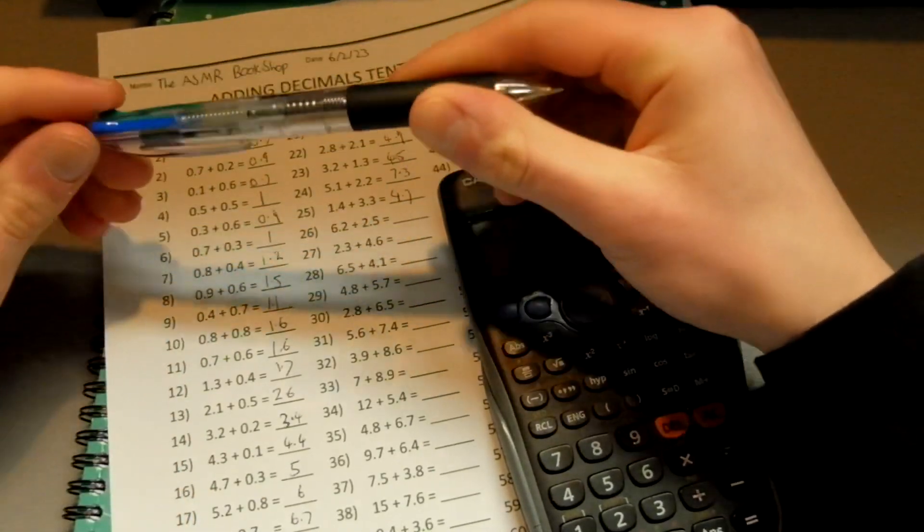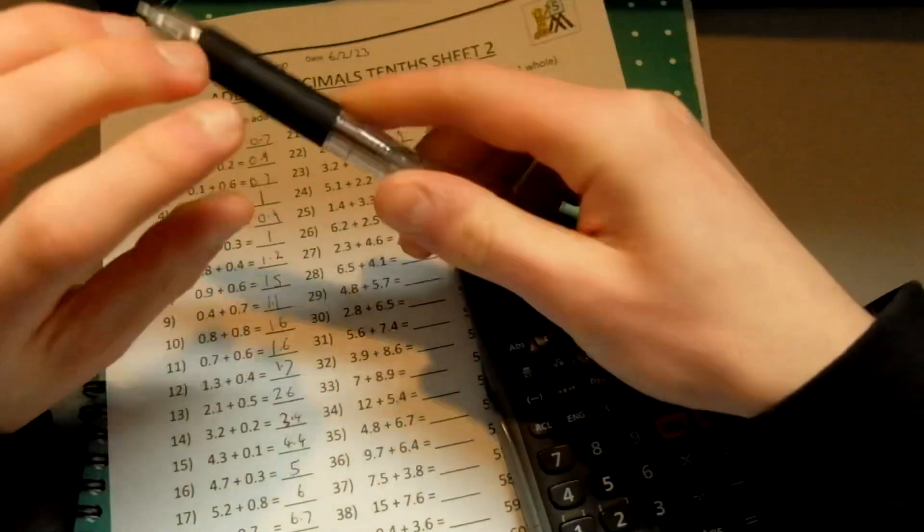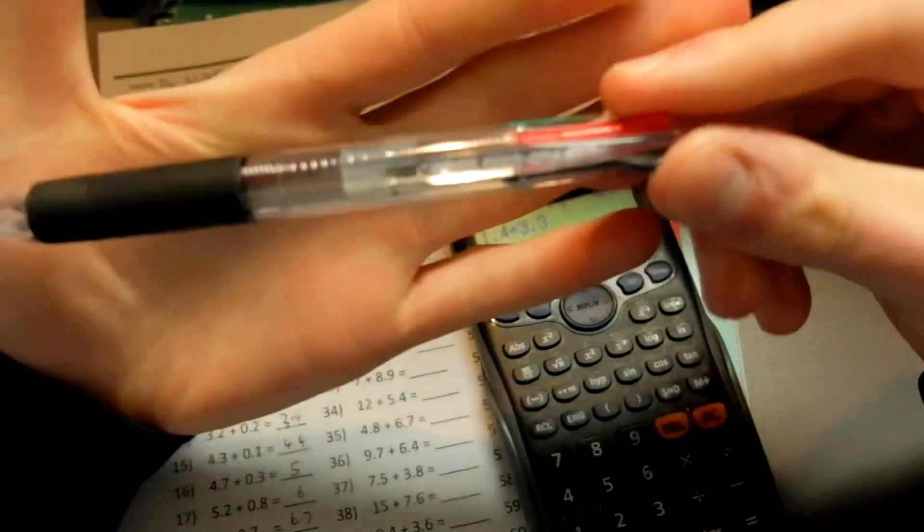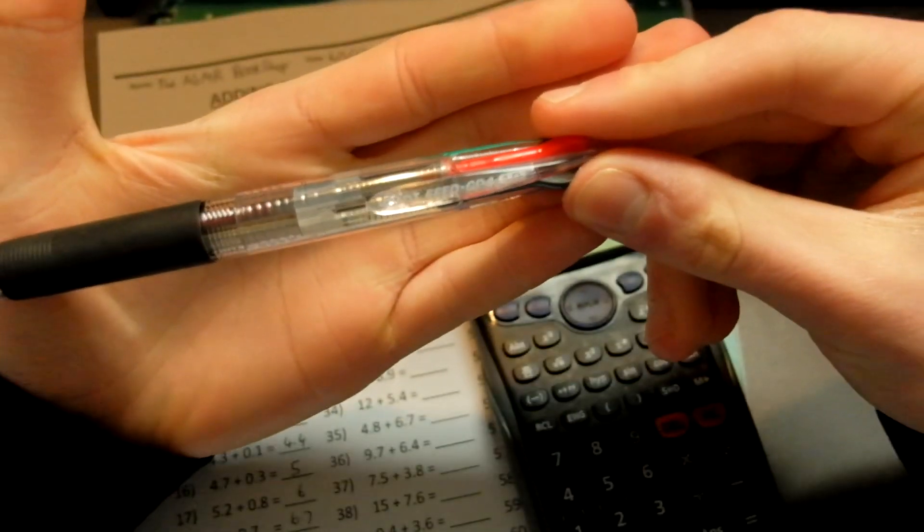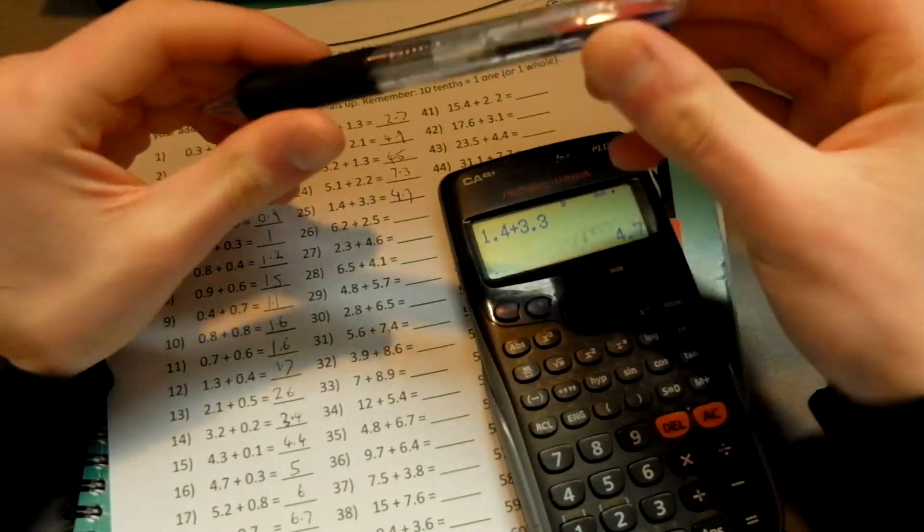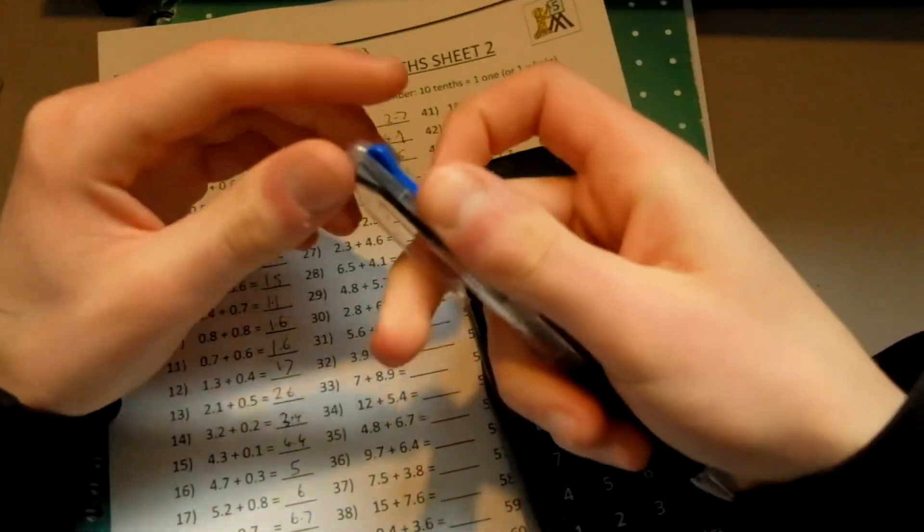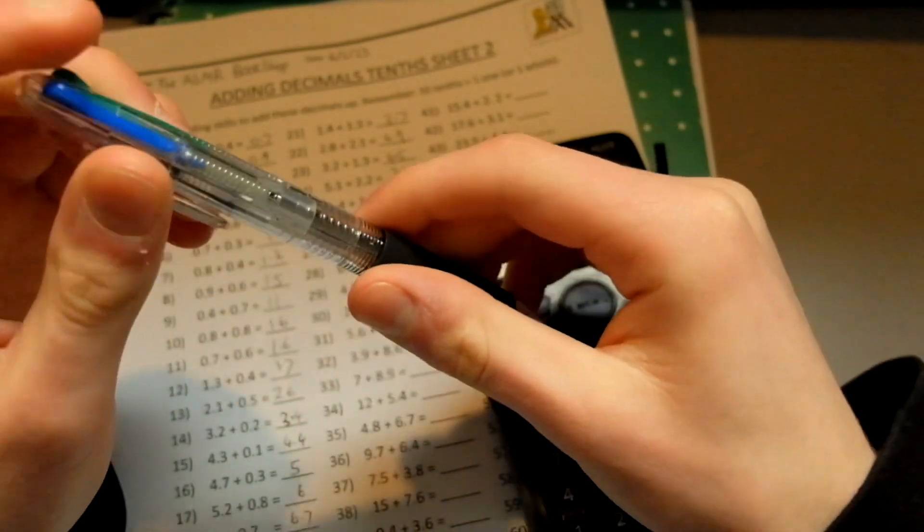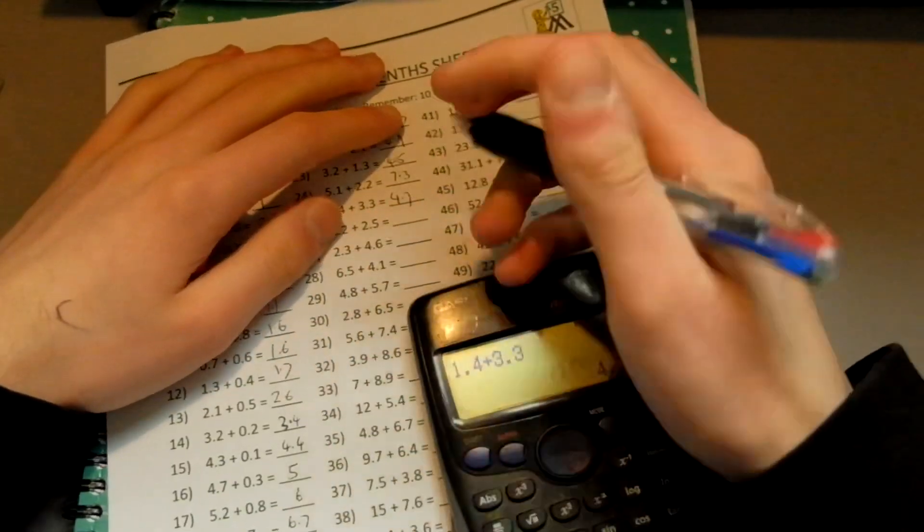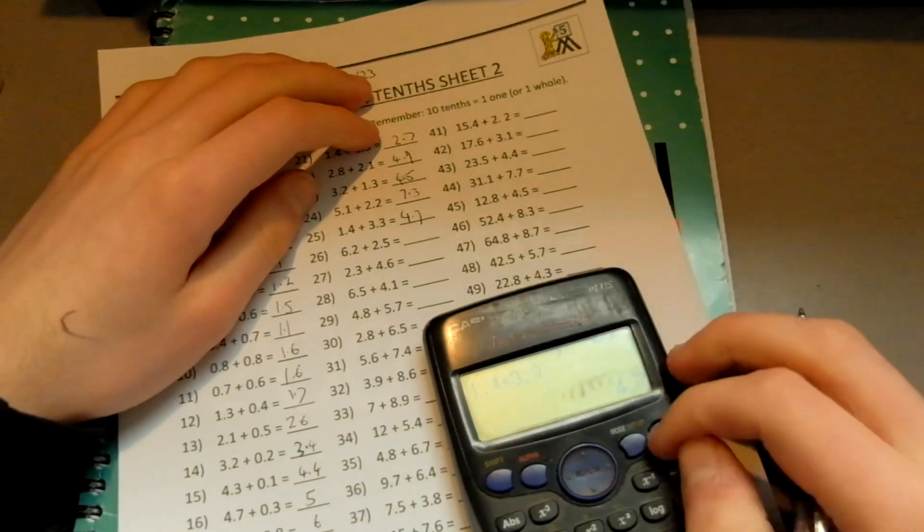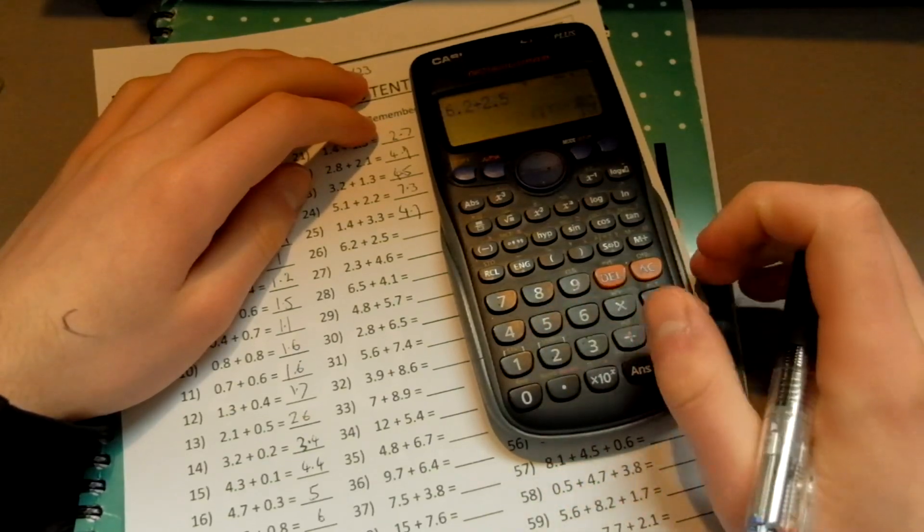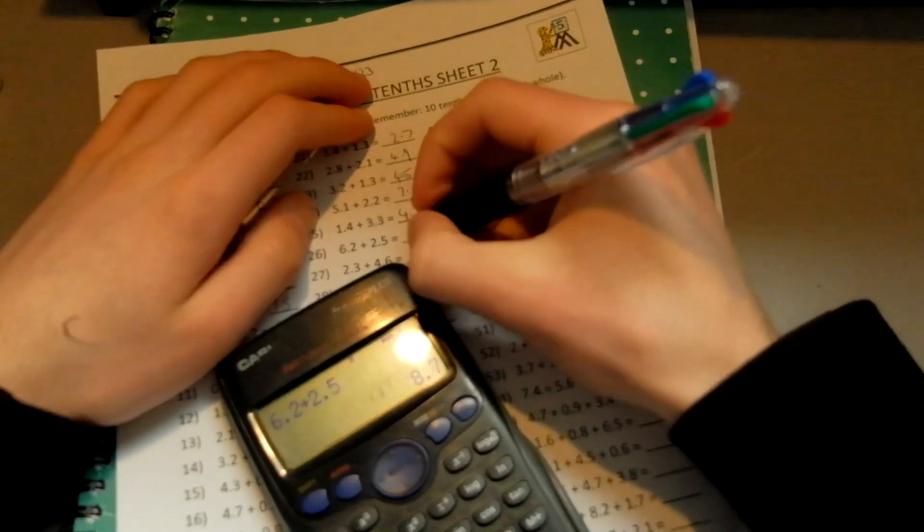Right. 1.4 plus 3.3 equals 4.7. If you wonder what pen I use, this is a great pen. I use it for, right? Let's see if the camera looks at. There you go. It's a Pilot Feed CP4 1.0. I doubt you're interested in that. But it's just so smooth to click. And it's just a lovely pen. And so smooth to write as well. So, 6.2 plus 2.5 equals 8.7.